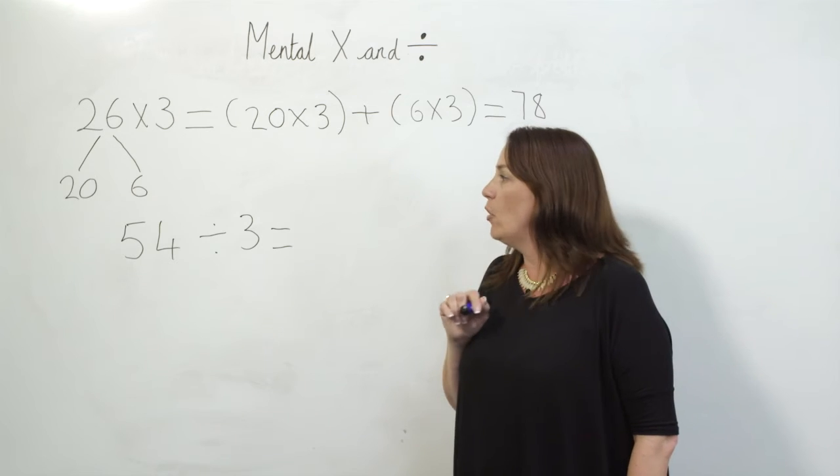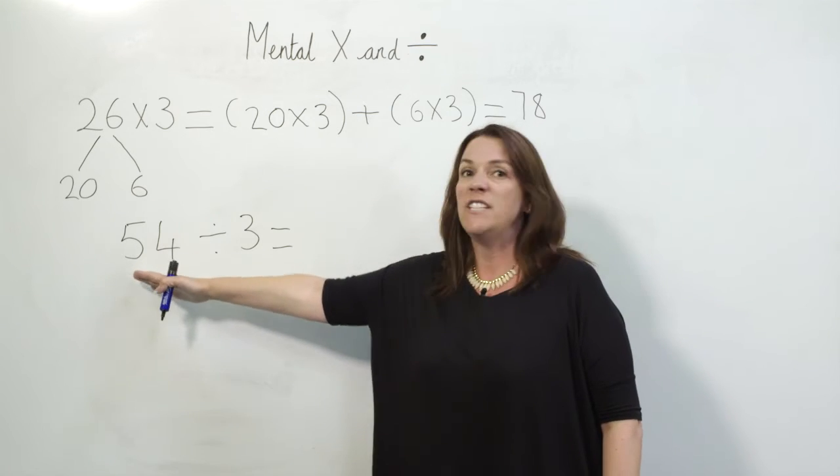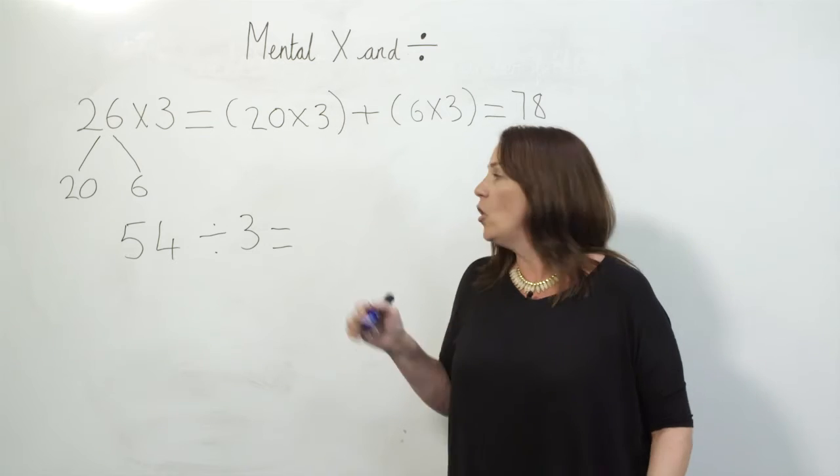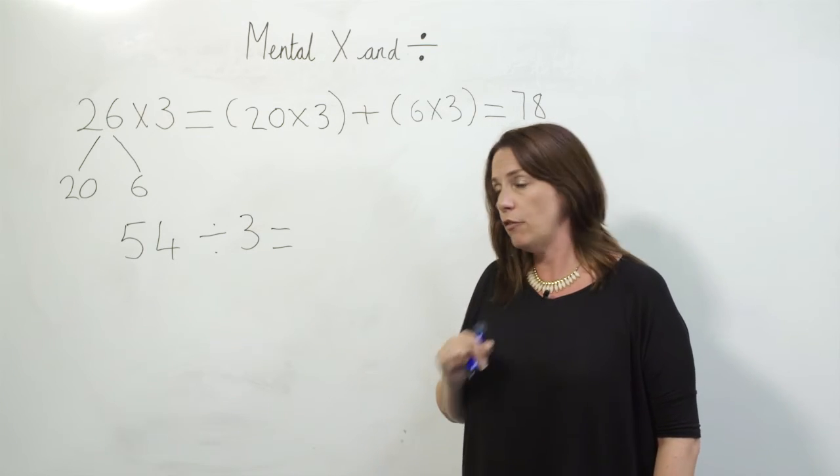Now I need to know whether or not I'm going to use 54, 50 and 4, or a different number bond. 50 and 4 isn't going to help me divide by 3, so I'm going to use a different one.